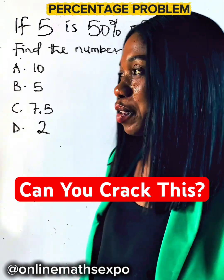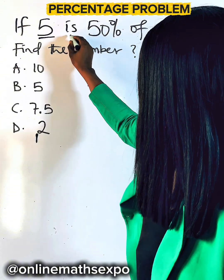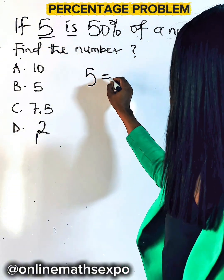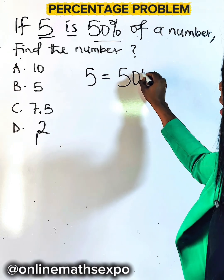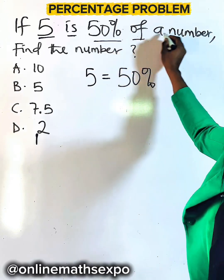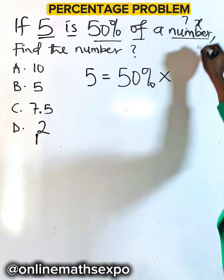It is just very simple. See what you do. If 5, you write it down, is equal to, then 50%, did you see? Of this number, you multiply. So what is that number? We don't know. We can use x. You are done.